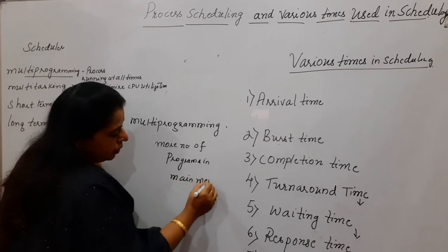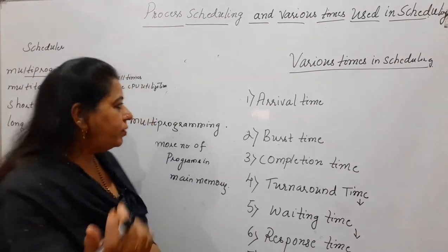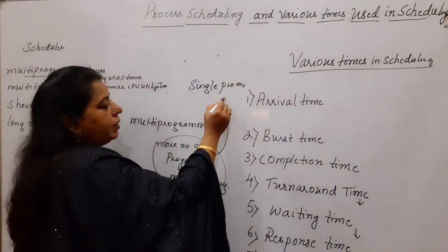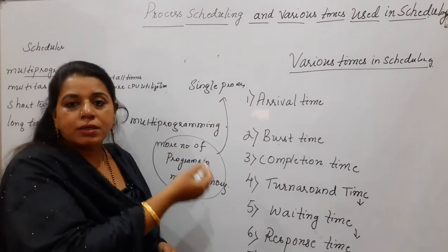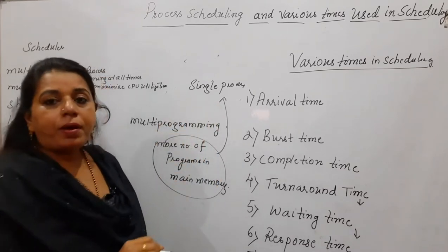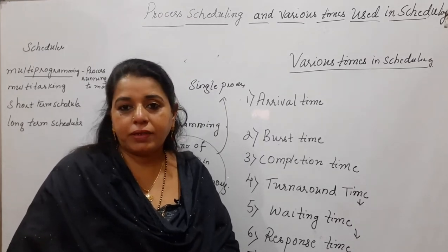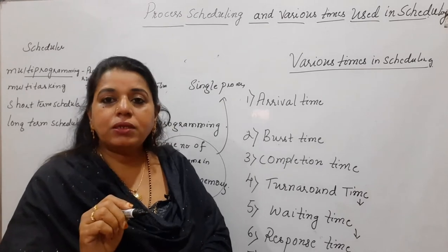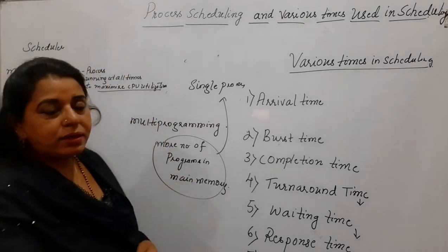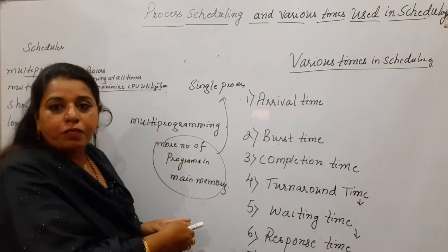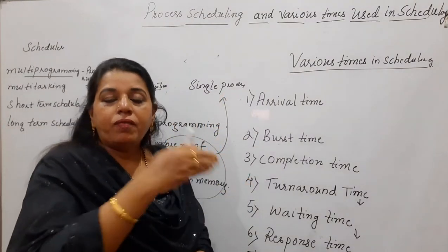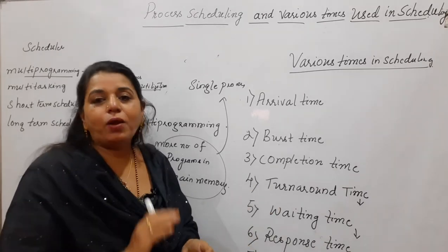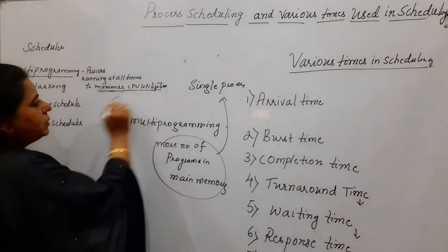If we have a system with a single processor and one single process in main memory, that process may make an input/output request, during which it does not require the CPU, making the CPU idle. To avoid this and maximize CPU utilization, we go for multiprogramming — keeping more programs in main memory so that when one process makes an I/O request, another can be assigned to the CPU, keeping it busy at all times.